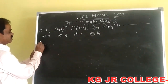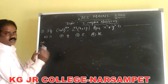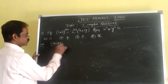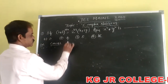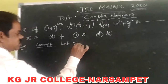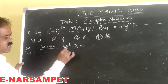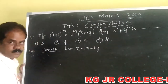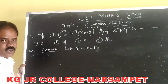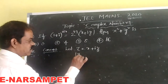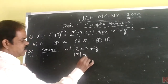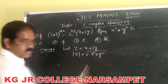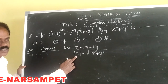Here is the solution. The concept of this problem is: we know that for a complex number z equal to x plus iy, the modulus of z is equal to the square root of x squared plus y squared. This is the concept of the modulus of z.